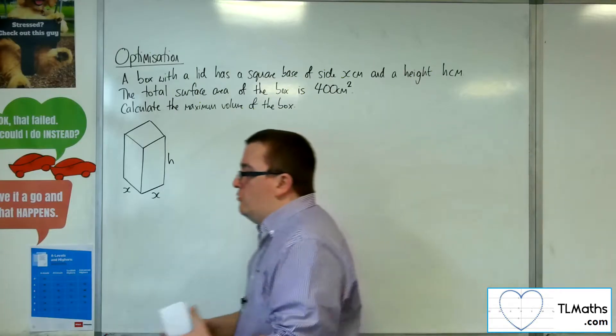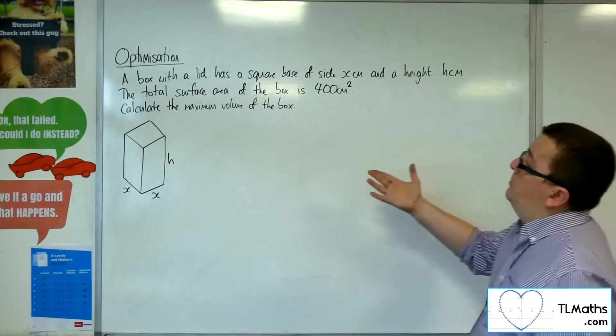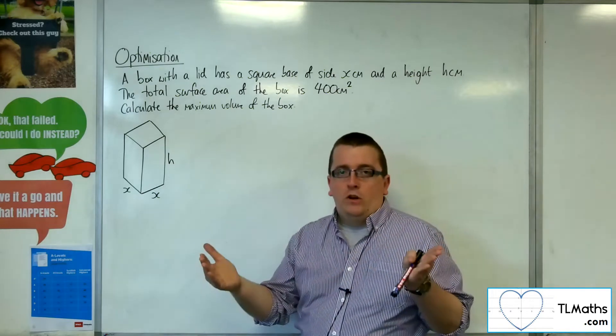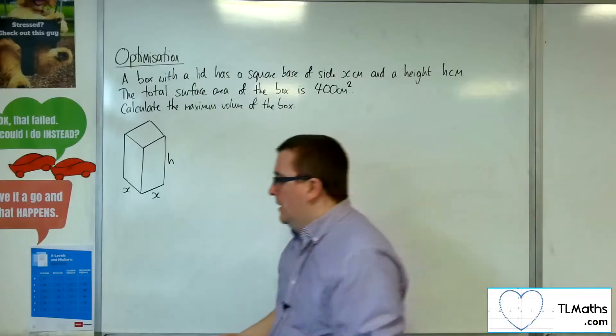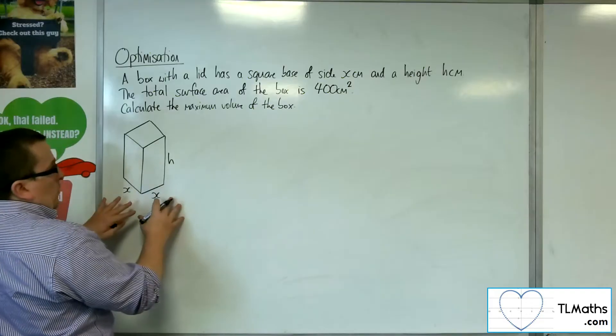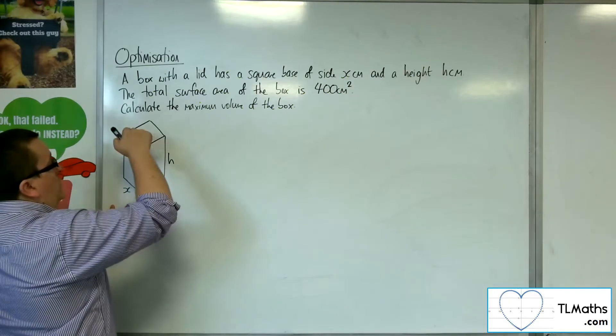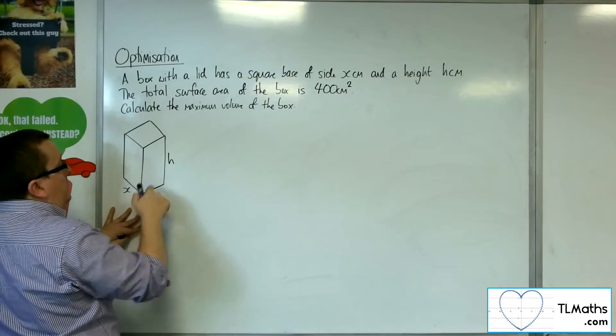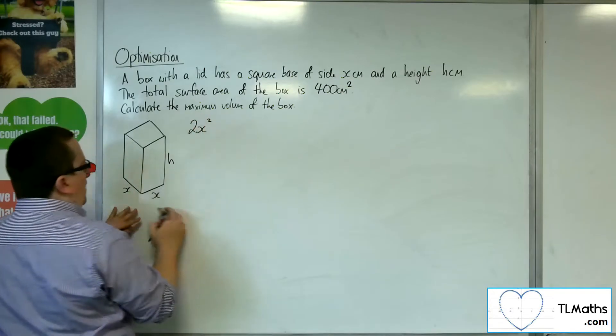There are a few stages we need to go through here. We're told that the total surface area of the box is 400 square centimeters, so I want to write down an equation where the surface area equals 400. That's the first thing I really need to do. We're going to write down the surface area of this box. We've got the base and the top - the base is x squared and the top is x squared, so that's 2x squared.